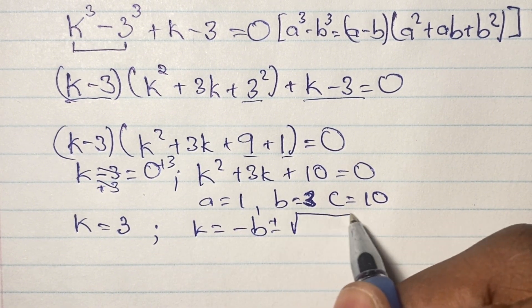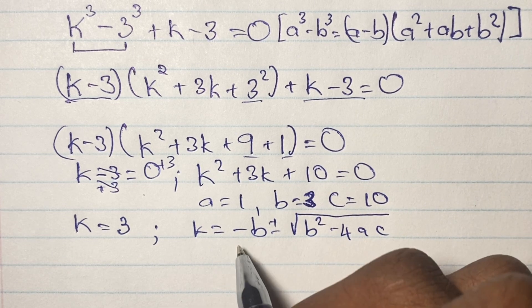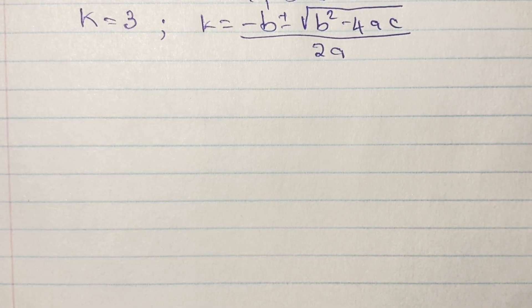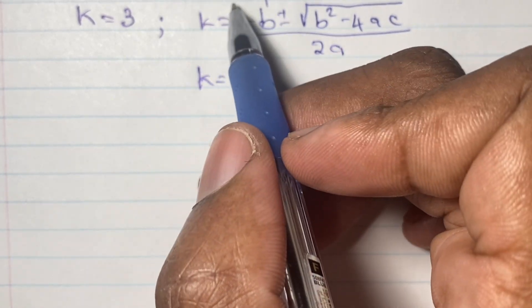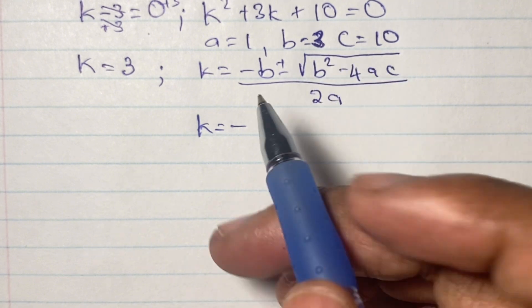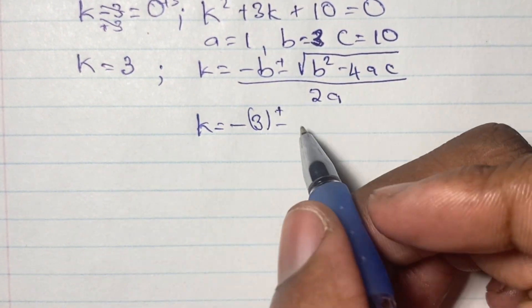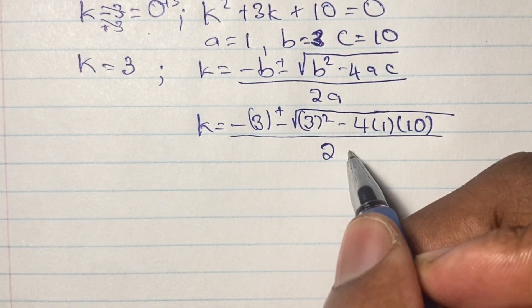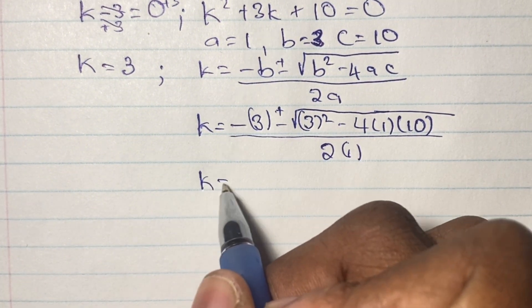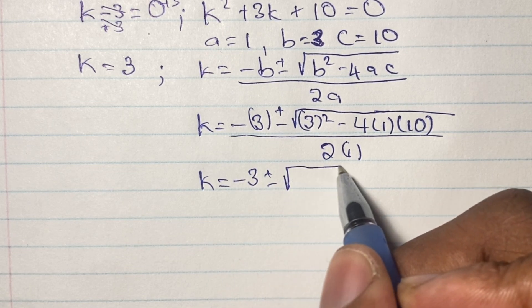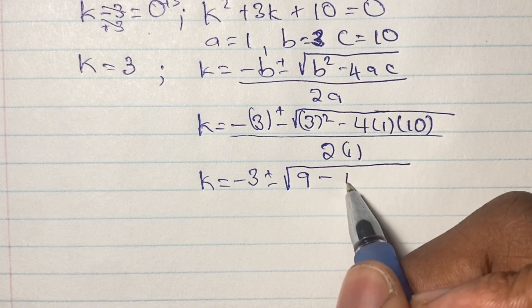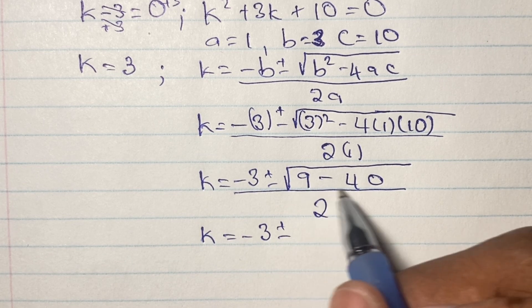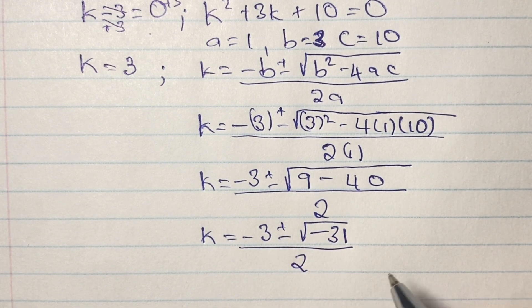We solve k using the quadratic formula: k = (-b ± √(b² - 4ac)) / 2a. Plugging in b = 3, a = 1, c = 10, we get k = (-3 ± √(3² - 4·1·10)) / (2·1), which simplifies to k = (-3 ± √(9 - 40)) / 2, giving k = (-3 ± √(-31)) / 2.